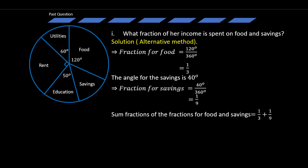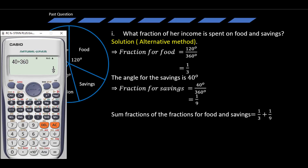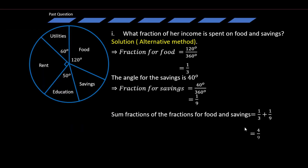Using the calculator, add 1 over 3 plus 1 over 9 and that gives you 4 out of 9, or four-ninths — the same answer as before. The methods are different but the result is the same. Therefore, the fraction of income spent on food and savings is 4 over 9.